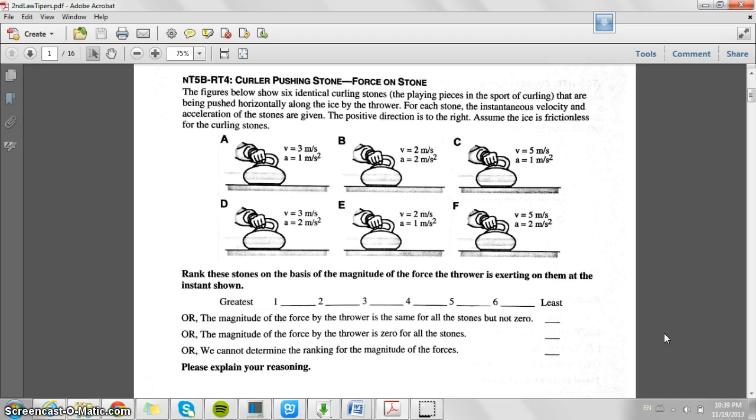Curler Pushing Stone. The figure below shows six identical curling stones that are being pushed horizontally along the ice by the thrower. For each stone, the instantaneous velocity and acceleration of the stones are given. The positive direction is to the right. Assume the ice is frictionless for the curling stones.